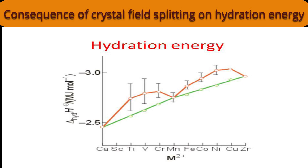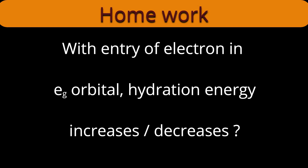Cu²⁺ (d⁹) can form an octahedral aqua complex, but Jahn-Teller distortion makes it very different — it is shown by a hollow circle and we will not discuss it now. Zn²⁺ (d¹⁰) has CFSE equal to zero; the crystal field and splitting effects are absent. As expected, Zn²⁺ falls back on the green line. This is the variation of hydration energy for dipositive ions; tripositive ions can be similarly explained. As a homework question: with entry of an electron into the eg orbital, relative to the previous element, will hydration energy increase or decrease? Post your answer in the comments.